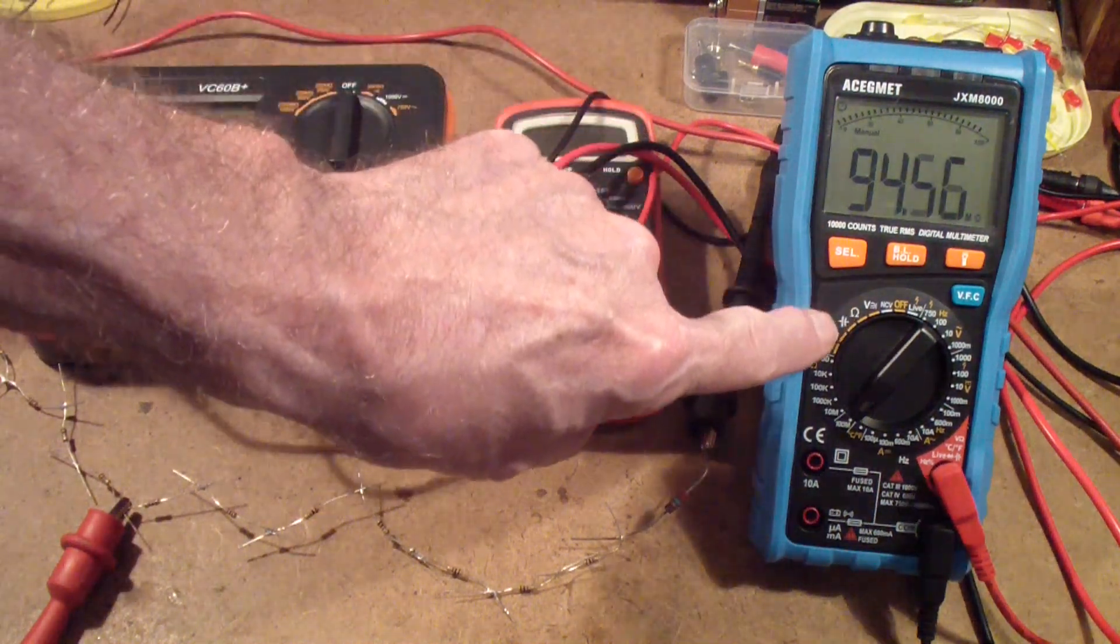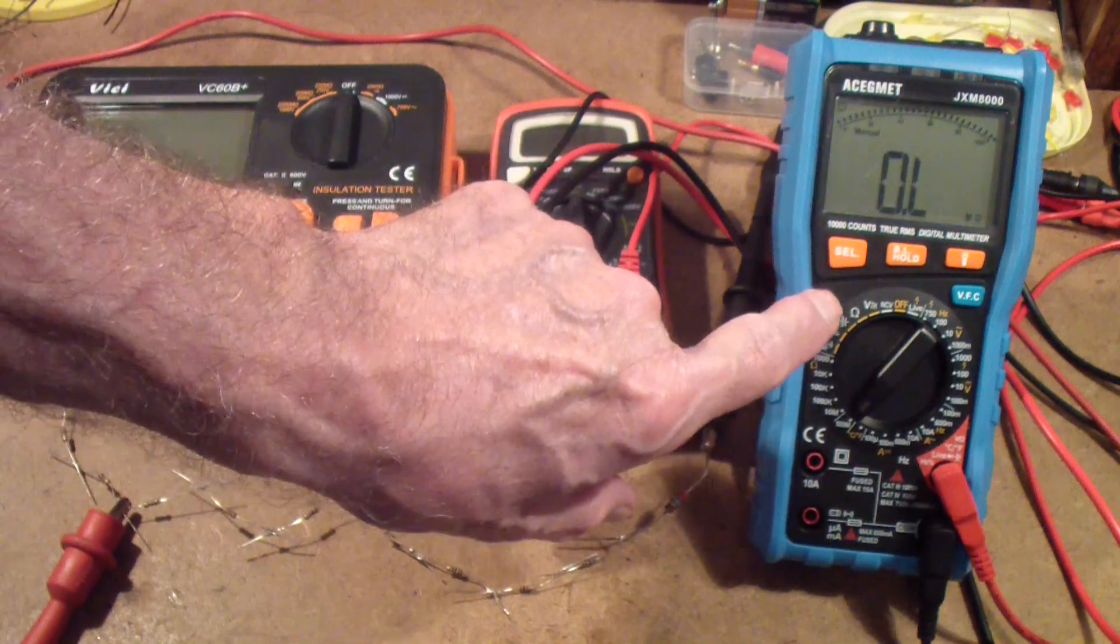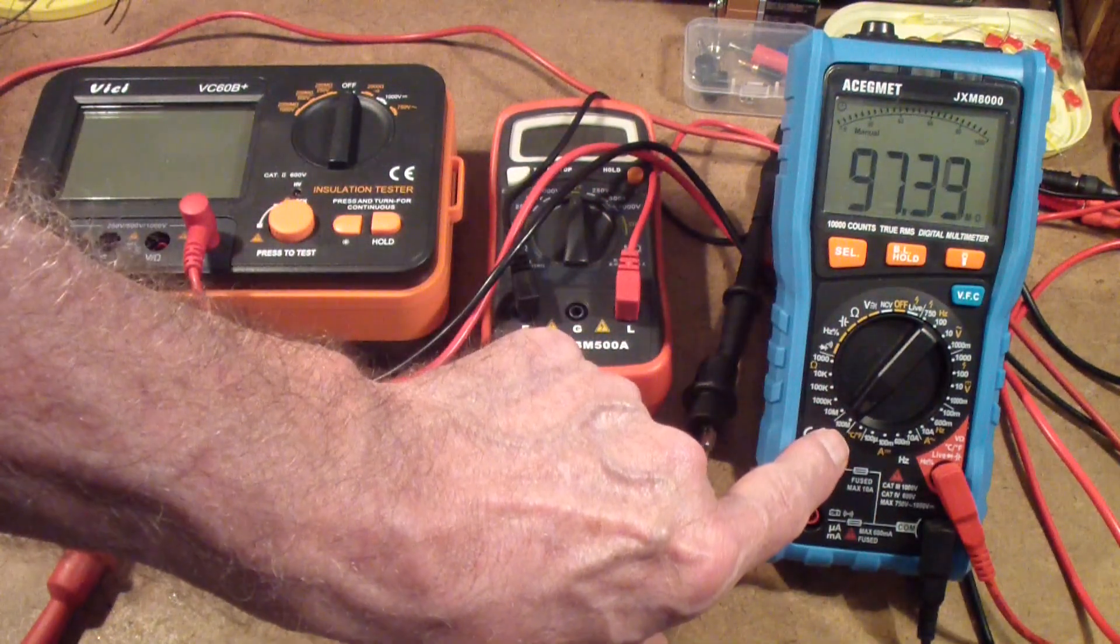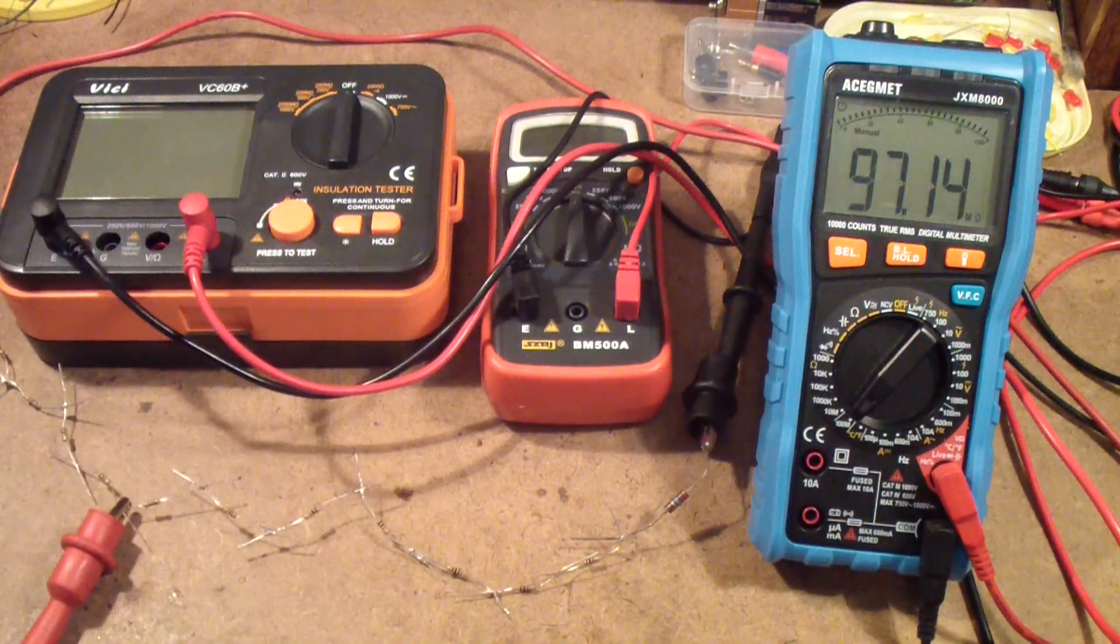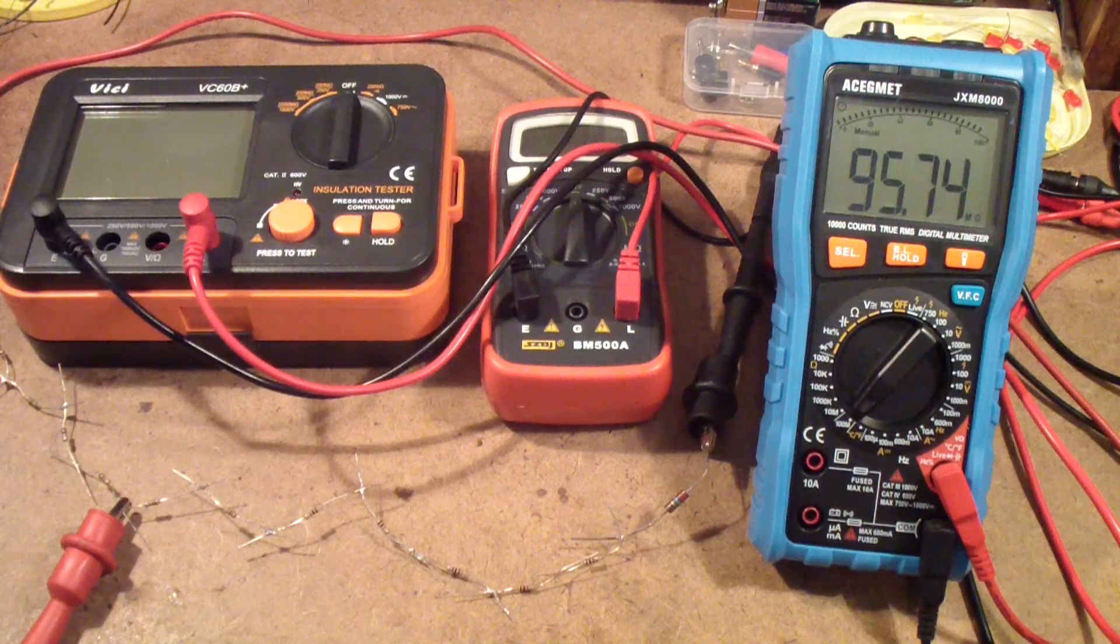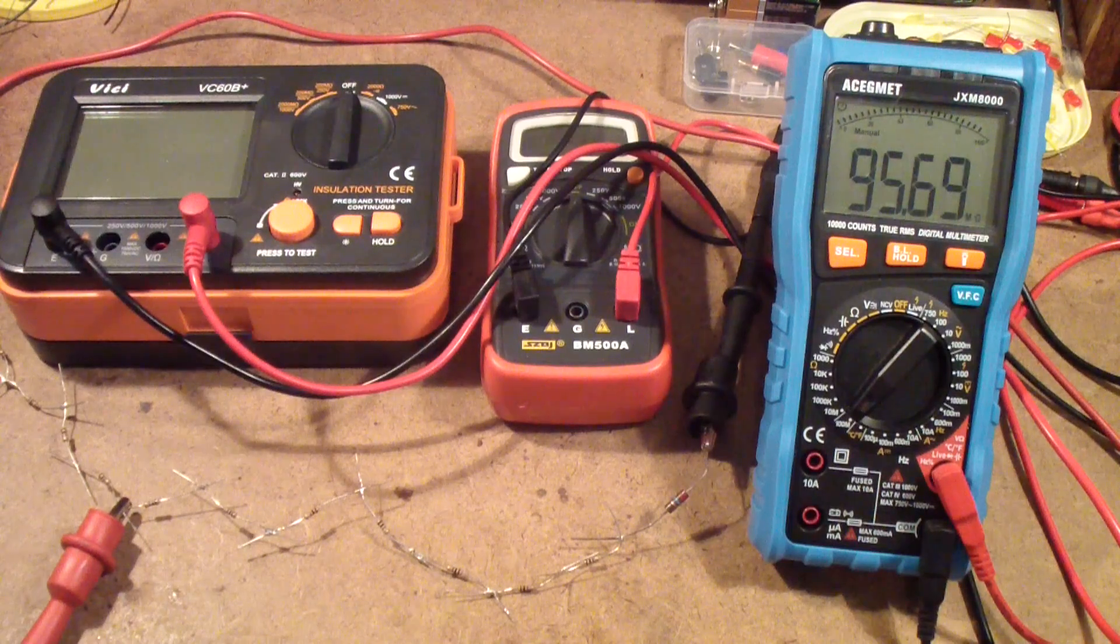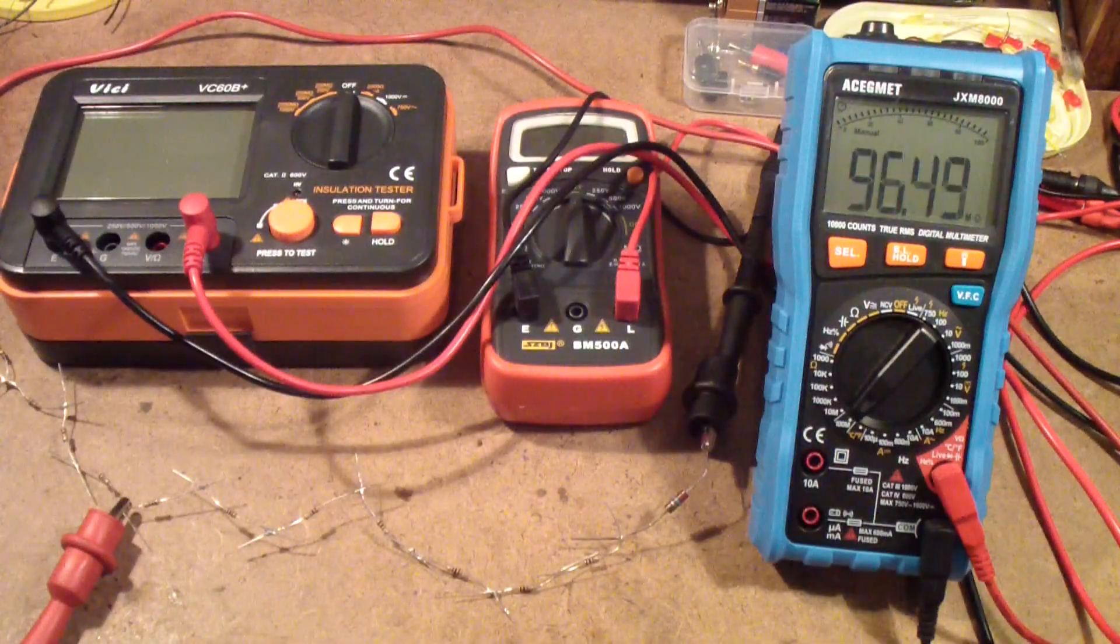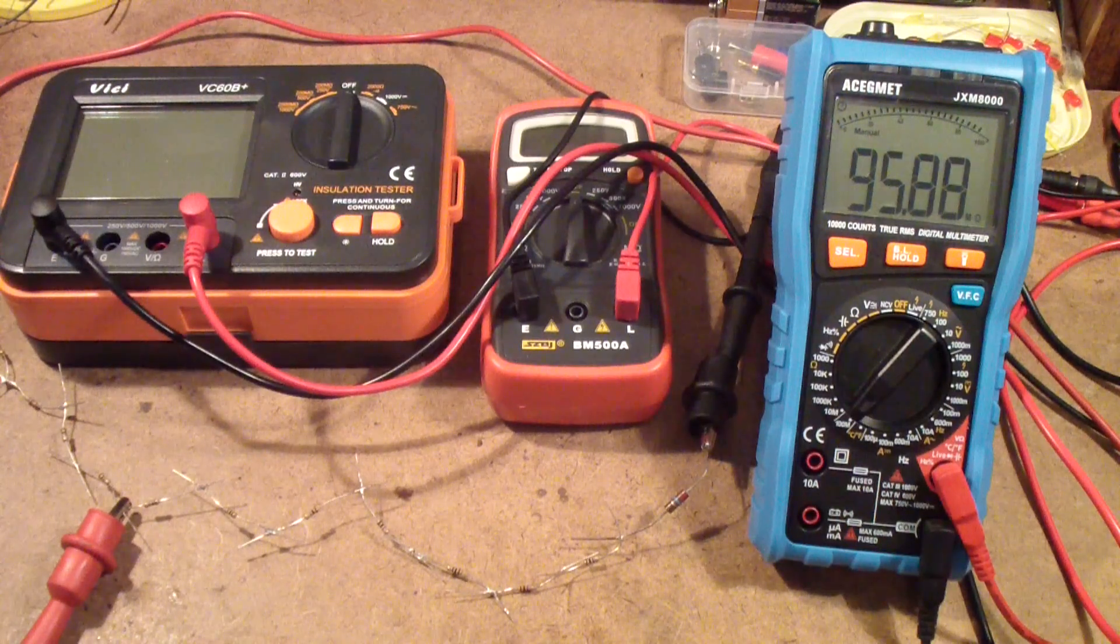I reviewed this meter a few weeks ago that has a 100 meg range, which is a little bit unusual, but not out of sight for multimeters. But you notice that it sometimes says overload and sometimes it says 95 mega ohms.